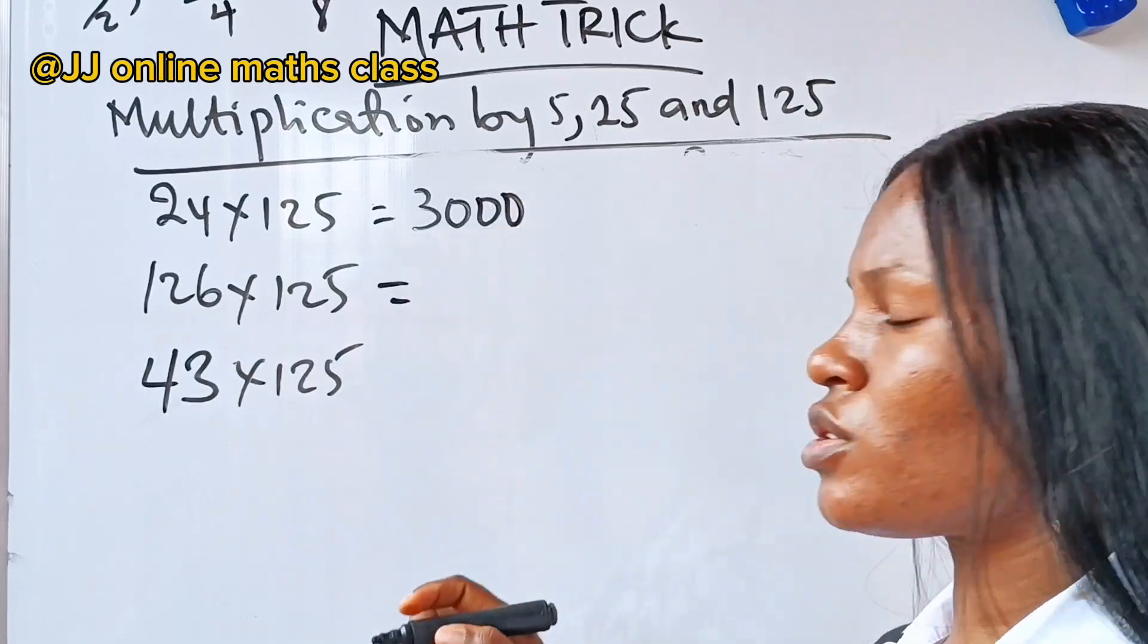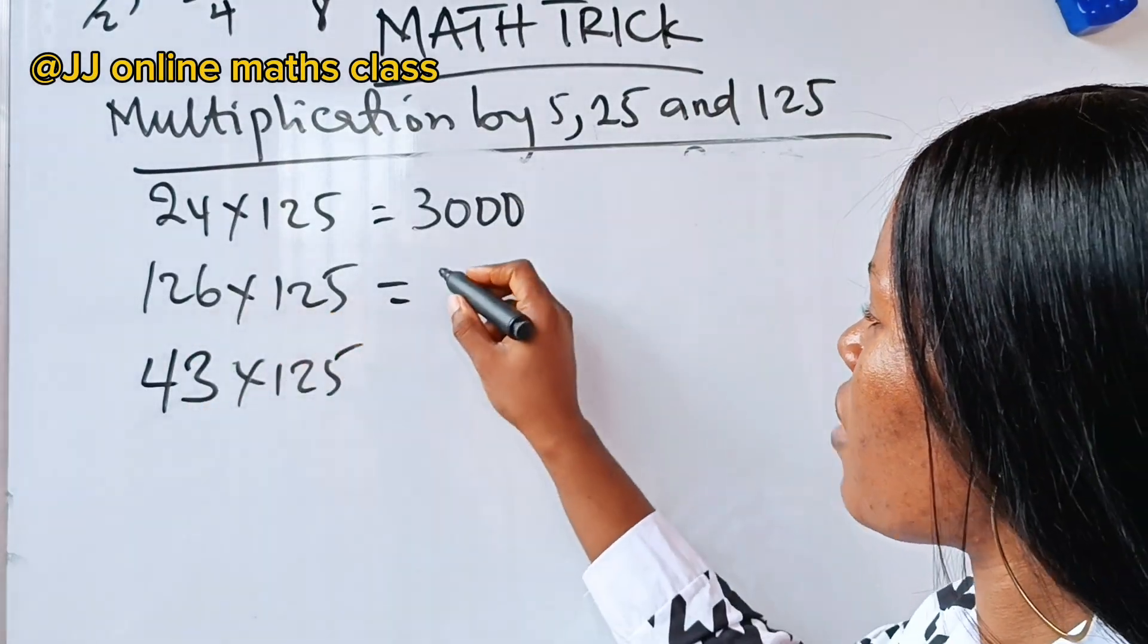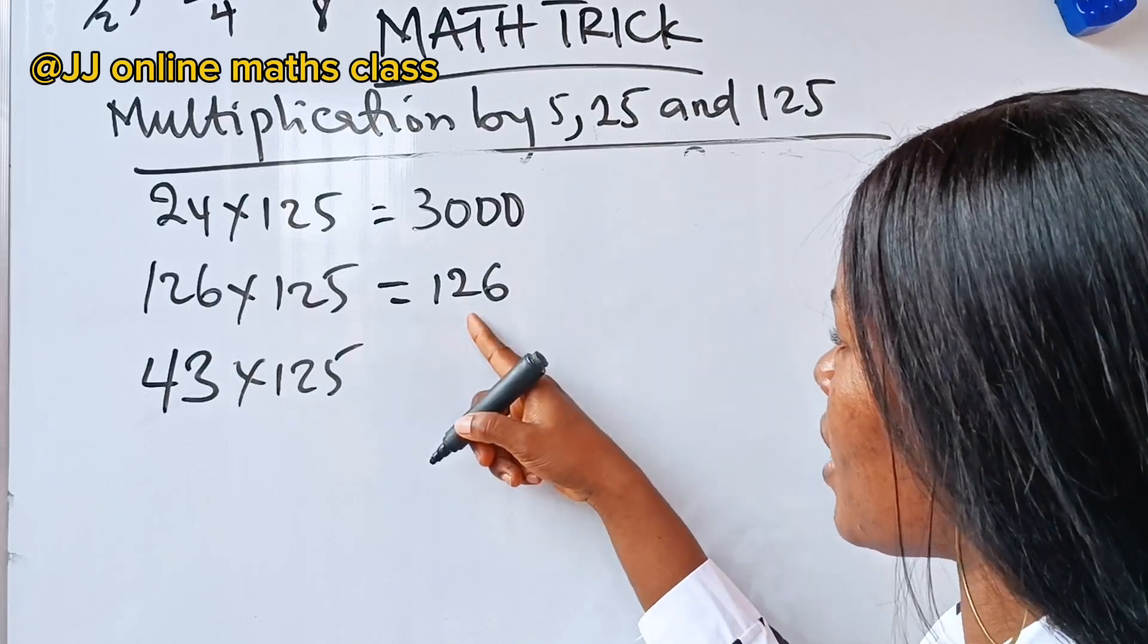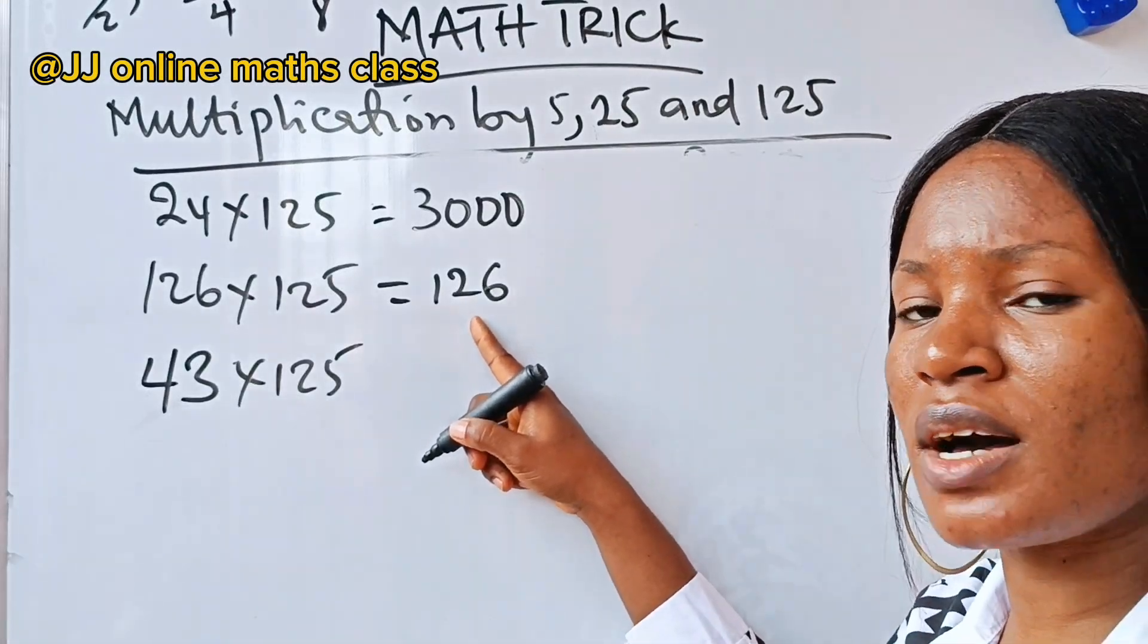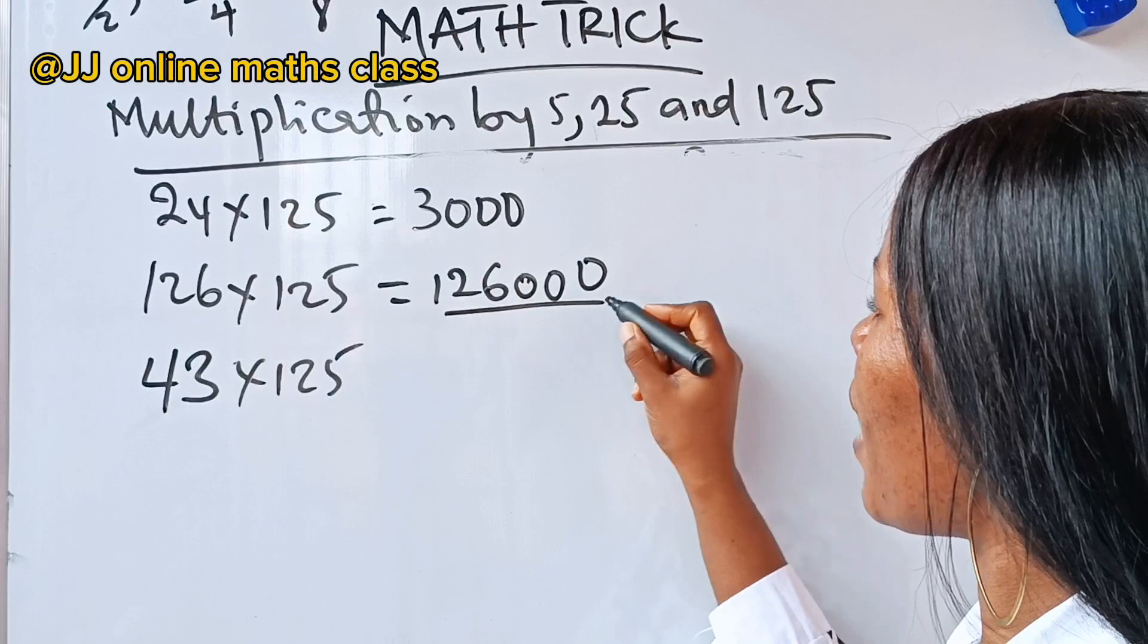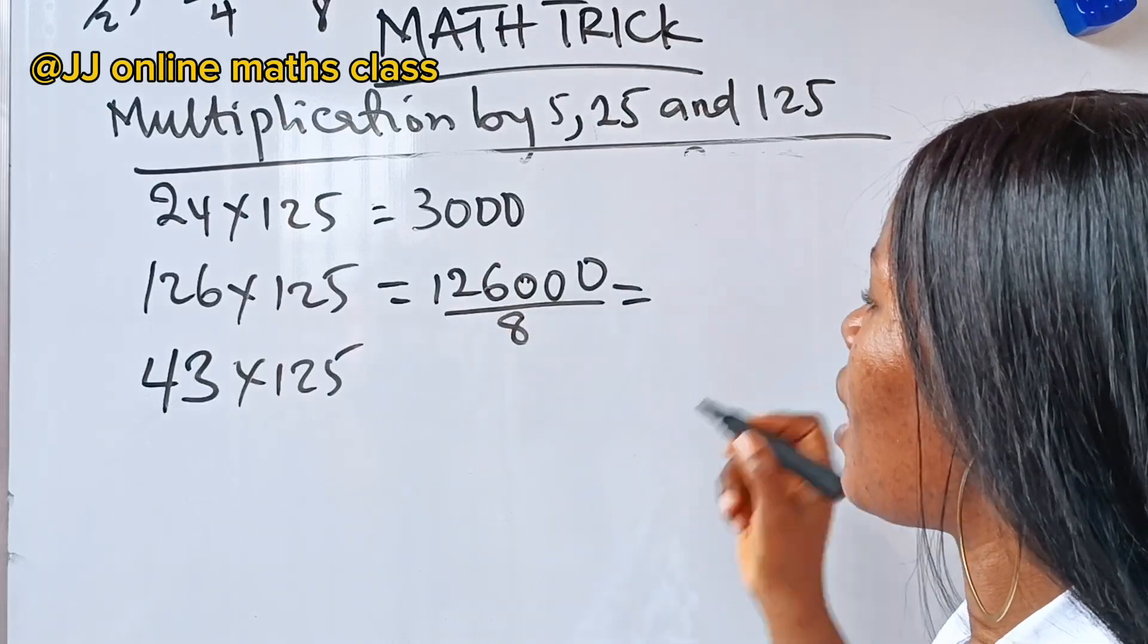Now, for the second one. 126 multiplied by 125. So, it's going to be 126 multiplied by 1000. That is 126 divided by 8. Now, let's solve.